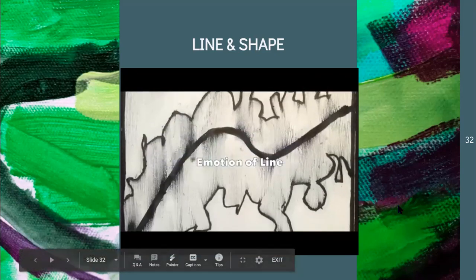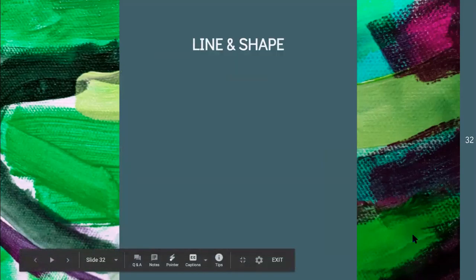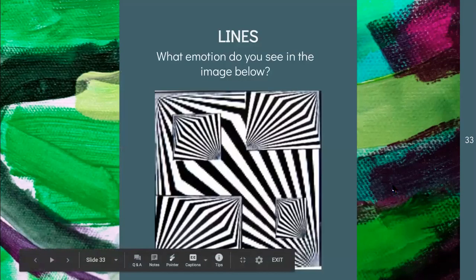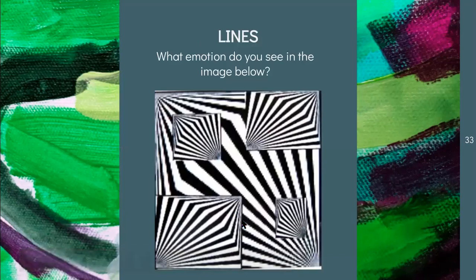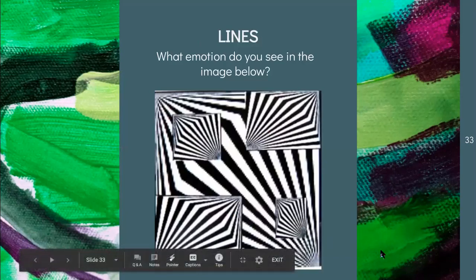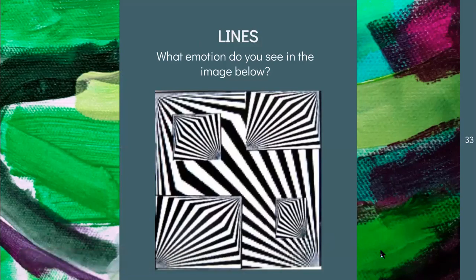When looking at this image, what emotions do you see? Words like confusion and uncomfortable come to mind just looking at this — there are lines going in different directions. I would say the word confusion very much represents what I'm seeing here. There's this distortion — I don't know where to look, I just feel uncomfortable, it feels distorted, it feels weird. Those are the words I would use to describe this.